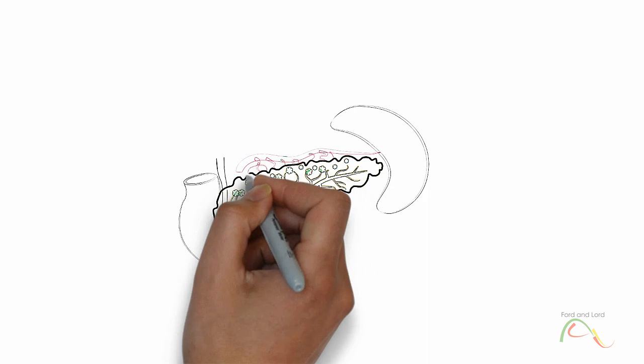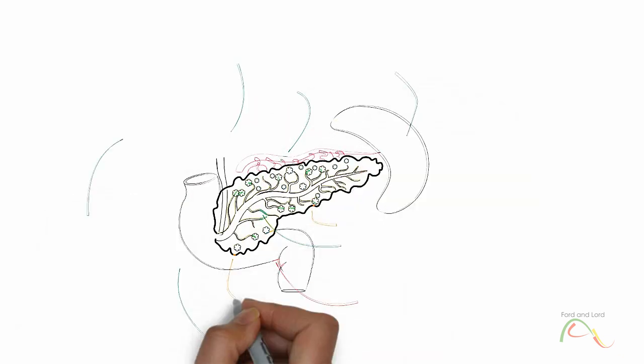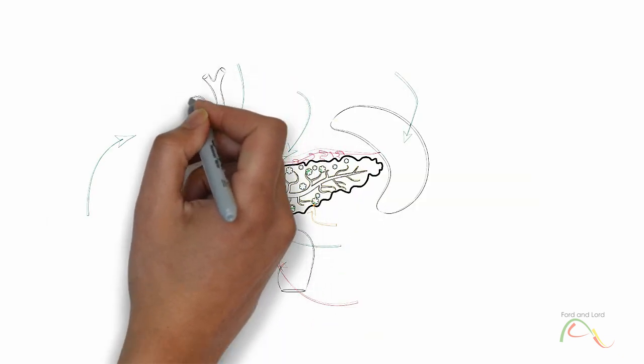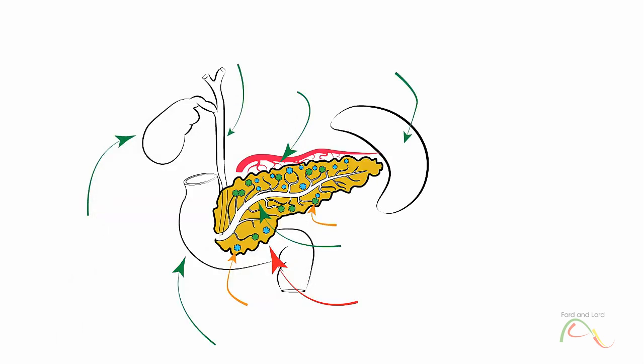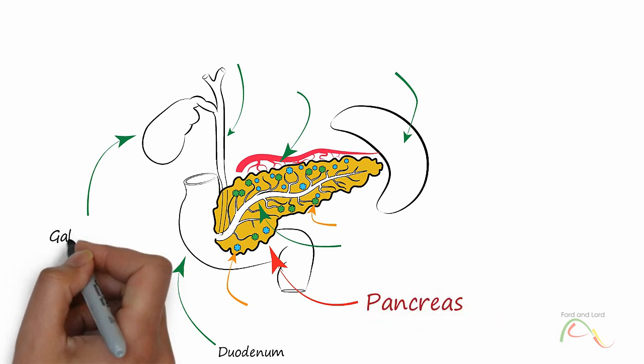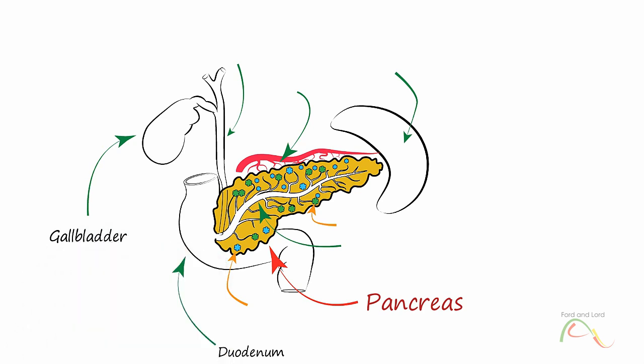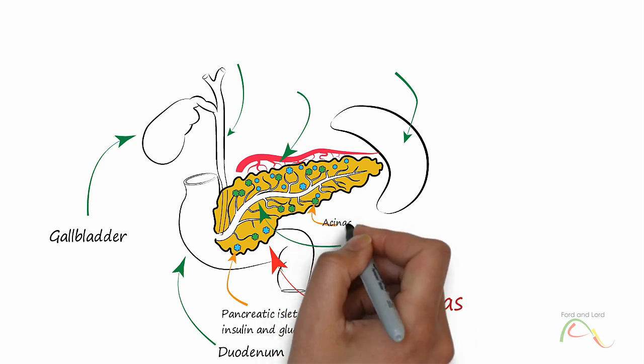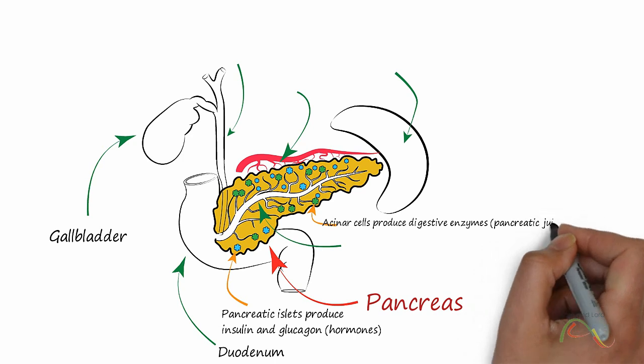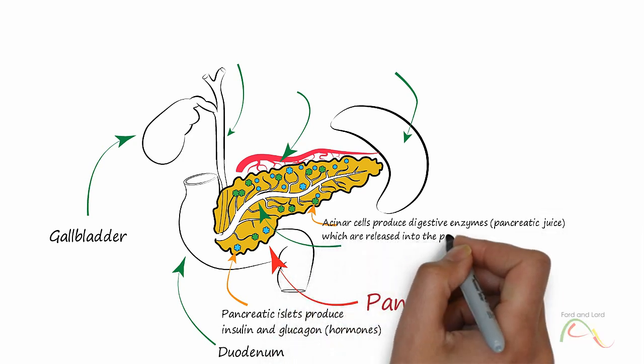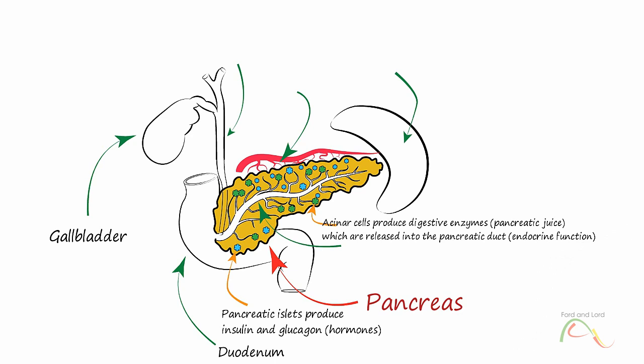Pancreas releases insulin and glucagon directly into the blood, which is an endocrine function, and it also secretes pancreatic fluid into the pancreatic duct, which eventually ends up in the duodenum, which helps with digestion and is an exocrine function. Insulin is a hormone produced by the pancreas which regulates the amount of glucose in the blood. The insulin is released into the bloodstream as a result of food intake, where it helps move glucose into cells to be used as energy. Insulin is also responsible for storing excess glucose, mainly into the liver and muscles in the form of glycogen. The lack of insulin is the primary cause of type 1 diabetes.